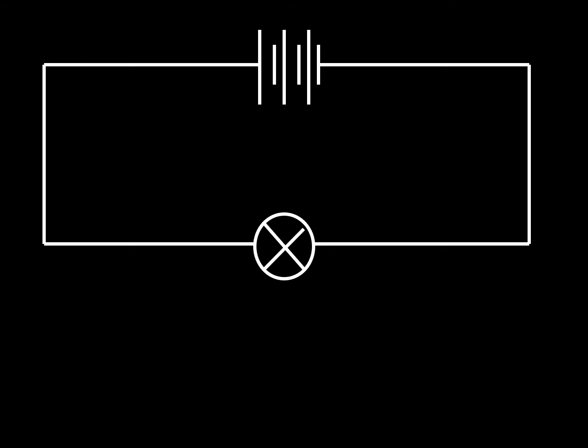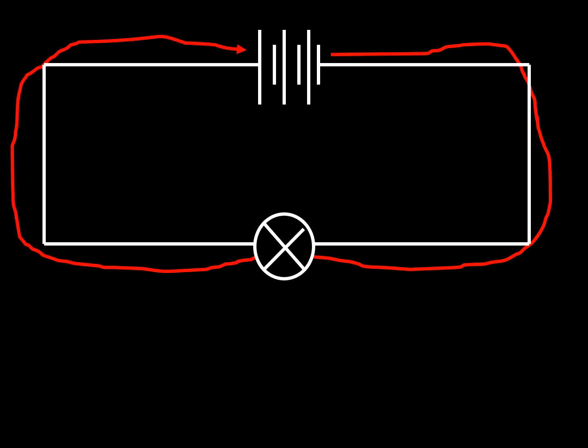Let's have a look. In a series circuit with one bulb, electricity flows around and I can put in a device called an ammeter, which measures how much current is flowing. The ammeter is connected in series. It's saying A1 has a value of 1.5 amps. If you look at that line representing the current flowing around, what would be the value at point A2? It's 1.5 — the current is the same wherever you look in a series circuit.